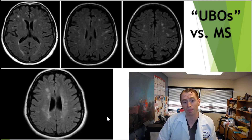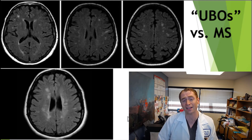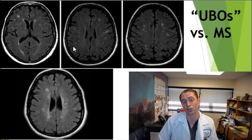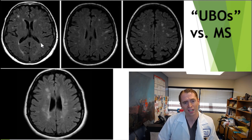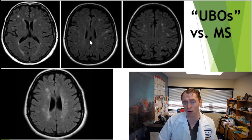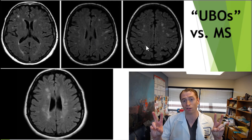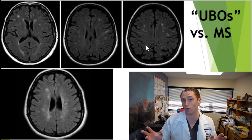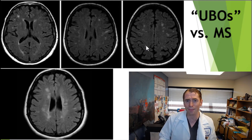For instance, the MRI on the bottom shows subcortical and periventricular white matter lesions, highly typical of MS. But the MRI on top — three slices from the same scan — shows patchy, subcortical, poorly defined white matter lesions not in typical locations associated with MS. These are so-called UBOs, or unidentified bright objects, and they're very common.